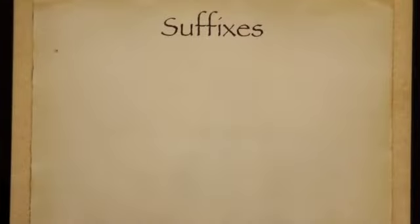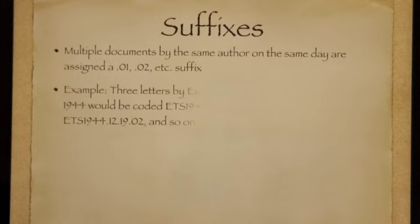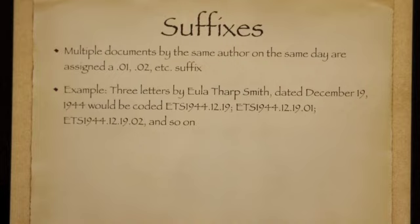Suffixes can be added to prevent duplication of numbers. Multiple documents by the same author on the same day can have an extension .01, .02, etc. For example, three letters by Eula Tharp-Smith dated December 19, 1944, would be coded ETS 1944.12.19, ETS 1944.12.19.01, ETS 1944.12.19.02, and so on.